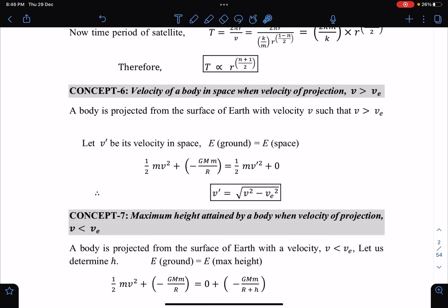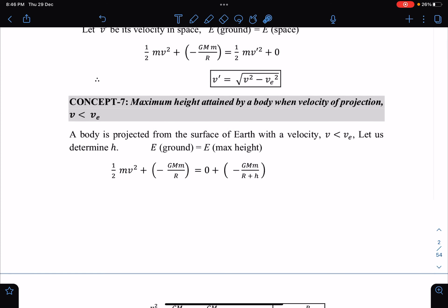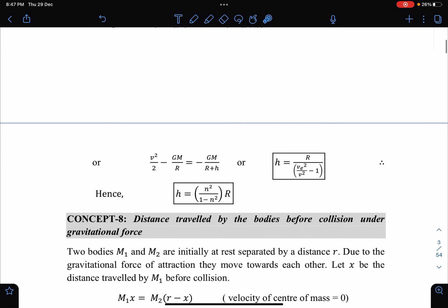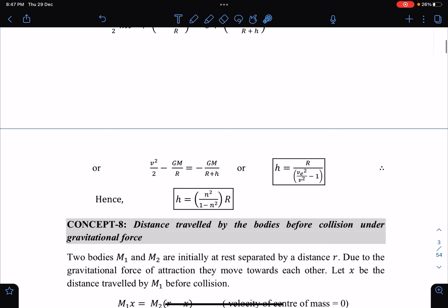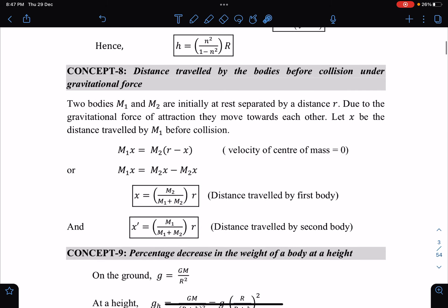Velocity of body in space when velocity of projection is more than escape velocity—at infinity or far away from the body this will be the speed. These small results are given here. If V is less than VE then maximum height, and you can compare those results. Distance traveled by the bodies before collision—these questions we normally do in the classes.